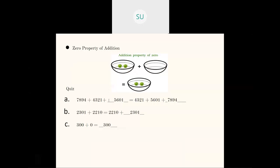Here is a small quiz. For 7,894 plus 5,601, any order we add gives the same final answer. Same way, 2,301 plus 2,210 is equal to 2,210 plus 2,301. And 300 plus 0 will be 300 itself. So these were a few properties of addition.